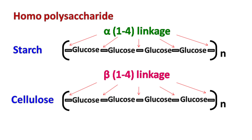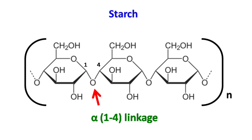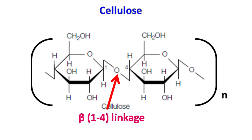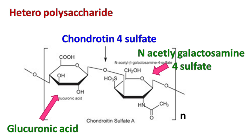Examples of homopolysaccharides include starch and cellulose. In starch, the glucose molecules are linked together by alpha-1,4 linkage. In cellulose, the glucose molecules are linked together by beta-1,4 linkage. The example of a heteropolysaccharide includes chondroitin-4-sulfate, which is made up of repeating units of glucuronic acid and N-acetylgalactosamine-4-sulfate.